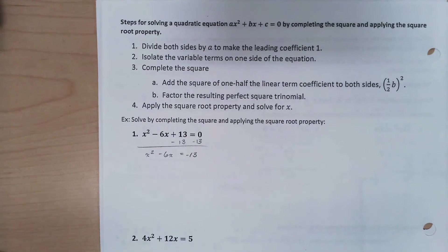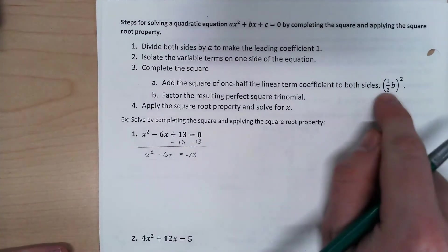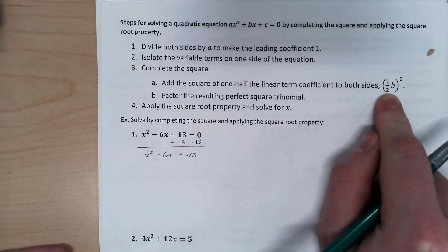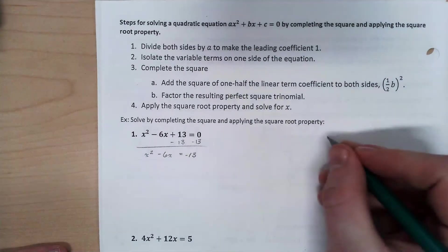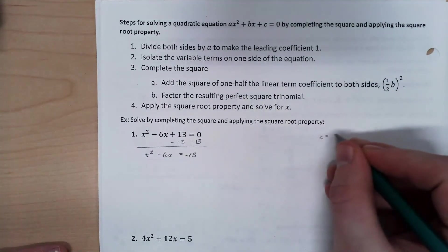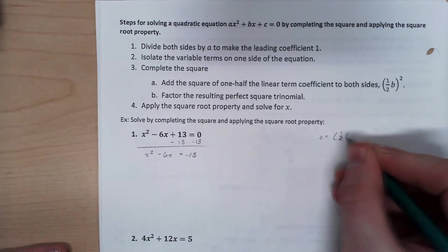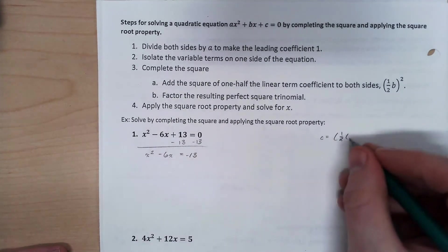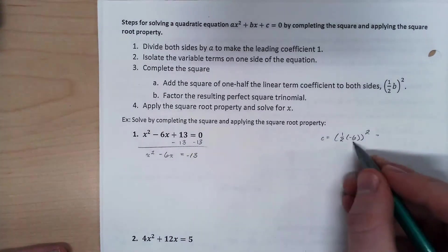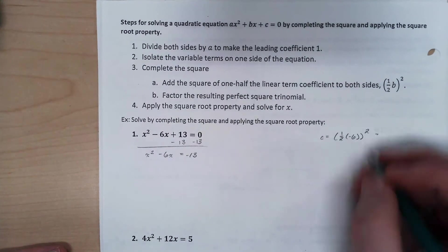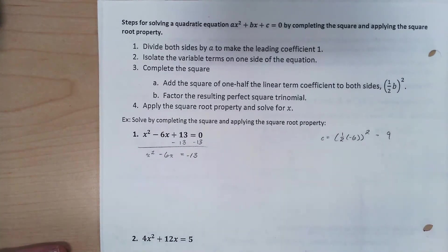So now we're going to decide what we want that c value to be. We're going to use this idea that c needs to be one-half of b quantity squared. So I'm going to find out what that is first. c needs to be one-half of negative 6 squared. Half of negative 6 is negative 3. Negative 3 squared is 9.